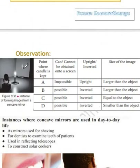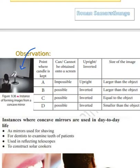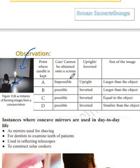If you do this practical, this is how you can observe. There is a paper or whiteboard used as a screen, here is the concave mirror, and here is the candle. You must place the ruler here when you perform this activity. When you keep the candle at point A, which is very close to the mirror, it cannot be screened. When you observe it through the mirror, it will be upright — not inverted, you can see it as it is.